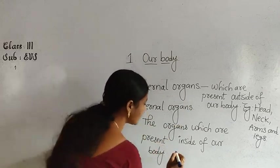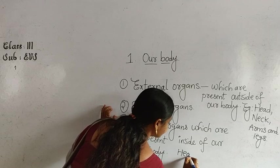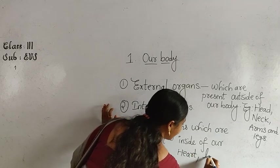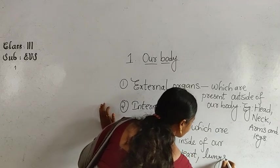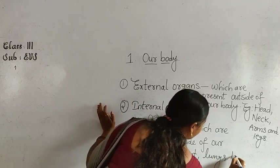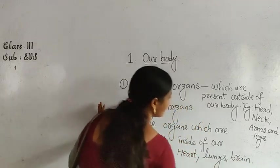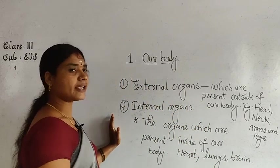So examples of internal organs are: heart, lungs, brain. These are the examples of internal organs.